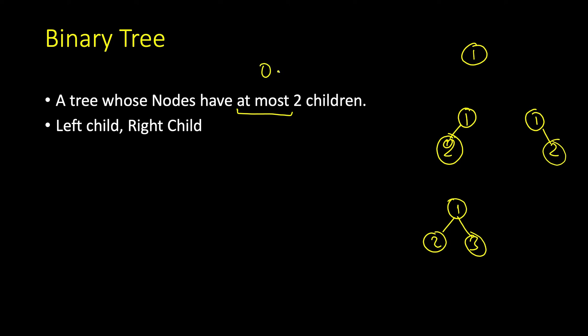So zero, one, or two children. And since here we have at max two children, we name them as left child and right child.